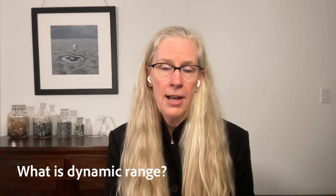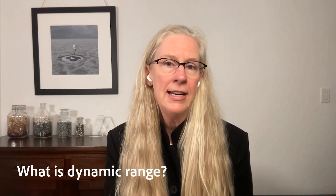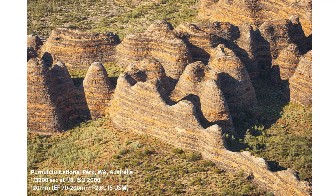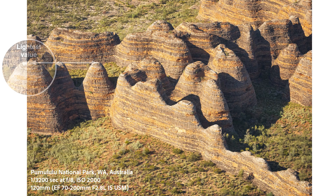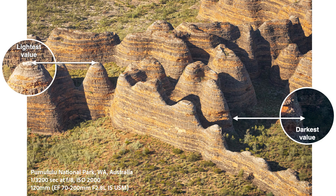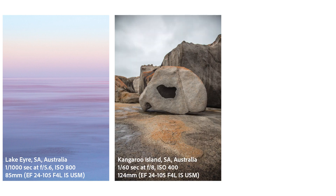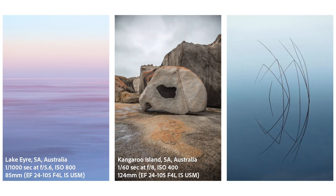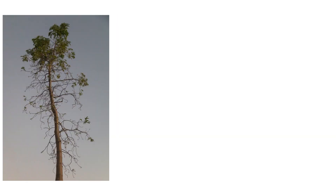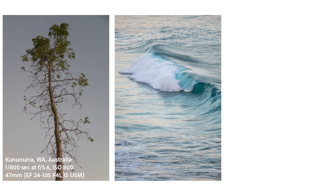Dynamic range describes the difference between the brightest and the darkest value in your scene, from pure black to brightest white. Unfortunately, it can be difficult for cameras to capture the entire dynamic range of a scene in a single exposure. This is one of the reasons that photographers like to take photos close to sunrise and sunset, on overcast days, if we're in shade, or even in a studio where the difference between the brightest and darkest values is much smaller.